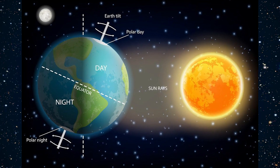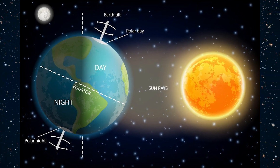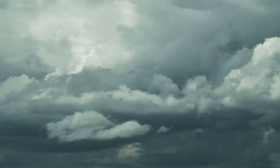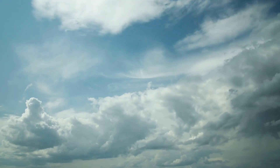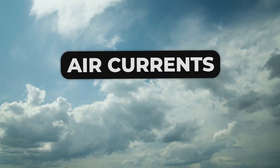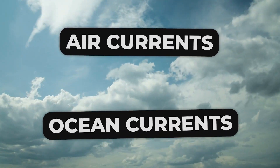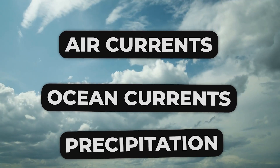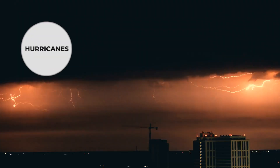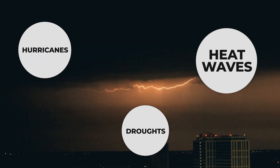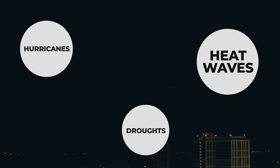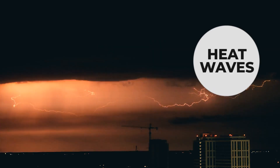The Sun's energy creates the cycles of day and night and the changing seasons, affecting our planet's climate and temperature. The Sun's energy also drives Earth's weather systems, causing air currents, ocean currents, and precipitation. This energy can cause extreme weather events such as hurricanes, droughts, and heat waves, which have a significant impact on our planet.